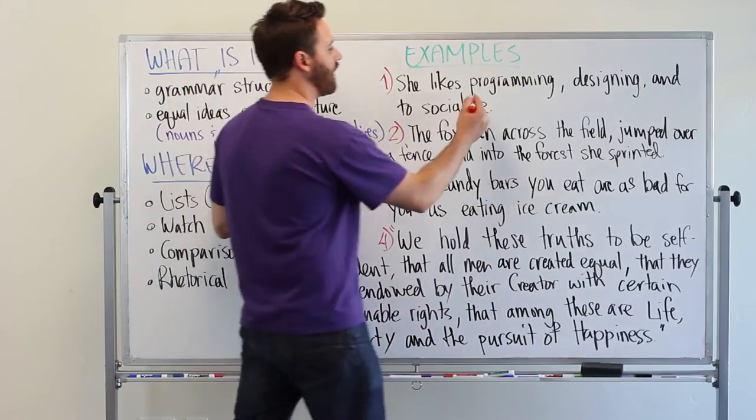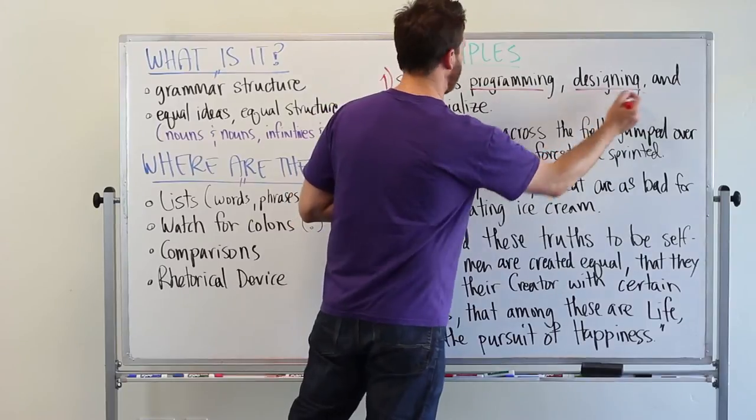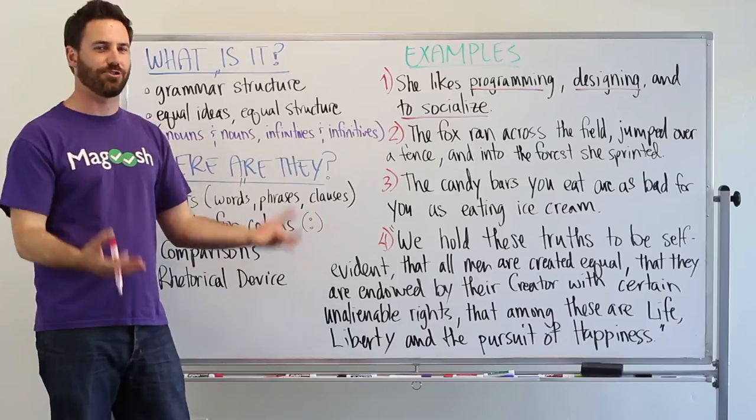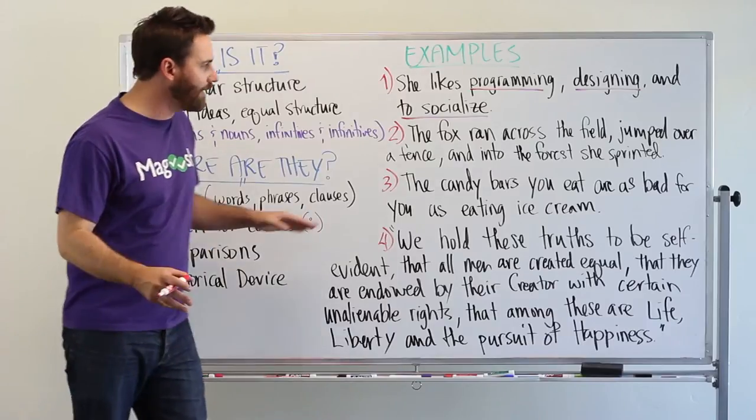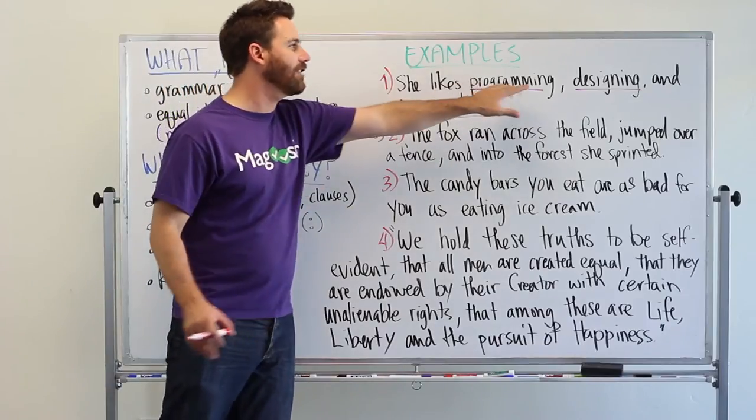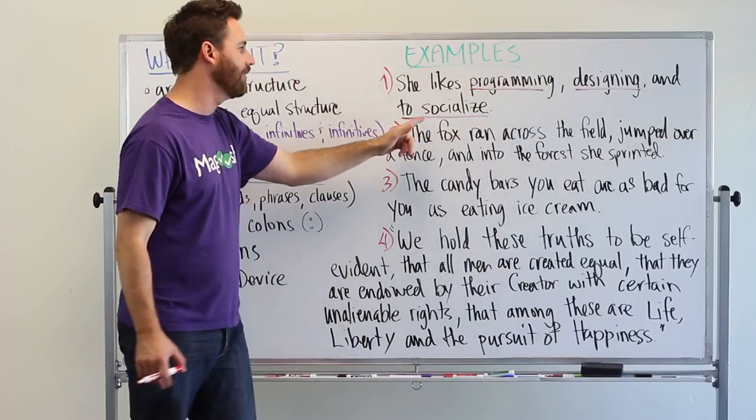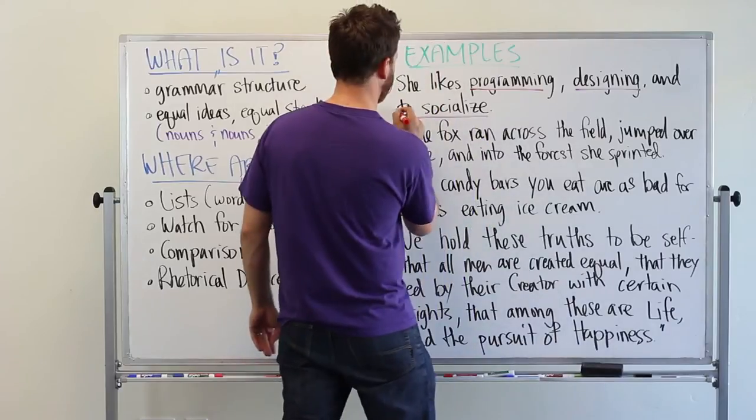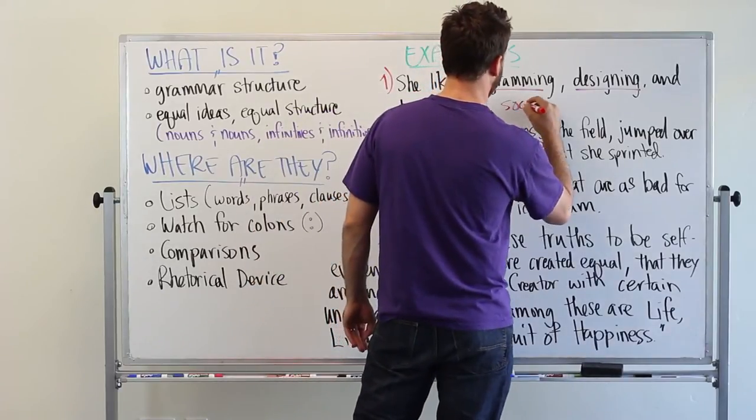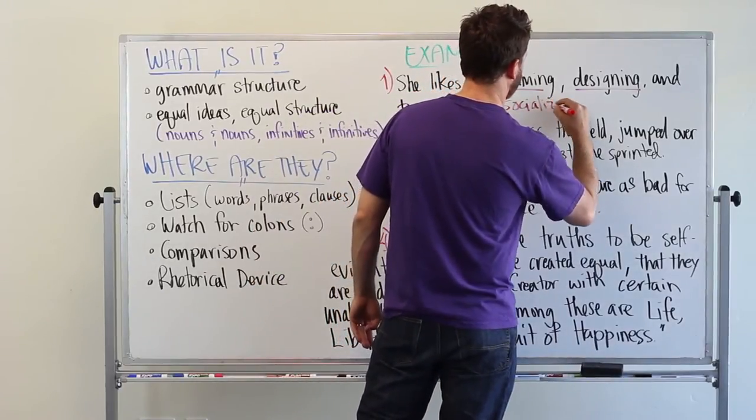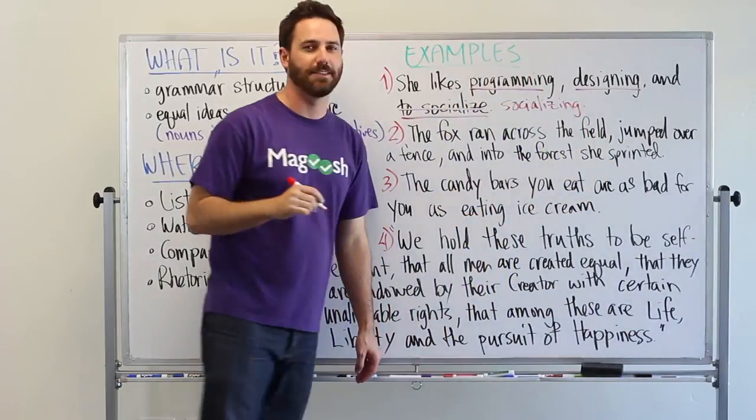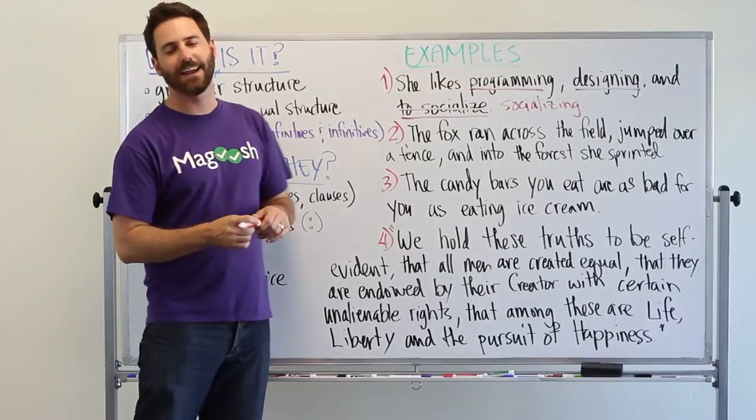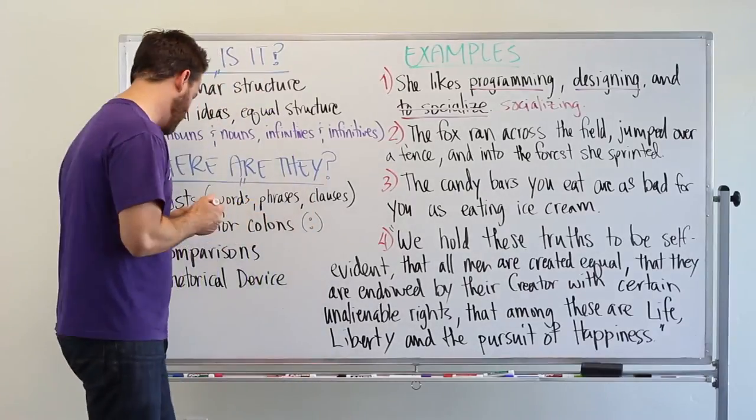So this one stands out to your ears. Hopefully it's being a little fishy. Something's wrong here. What we have is some gerunds and then an infinitive. So we're mixing and matching our structures. And so what we want is to either change these two to match this one, or just change this one. Which we'll probably do. So we change this to, cross it out. Change it to, that's right, socializing. So now it sounds a lot nicer. She likes programming, designing, and socializing.